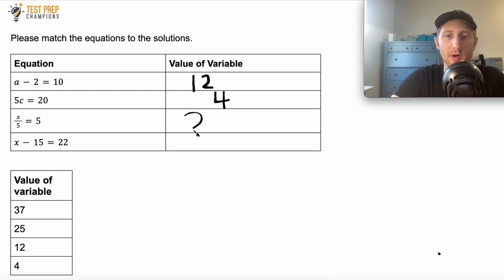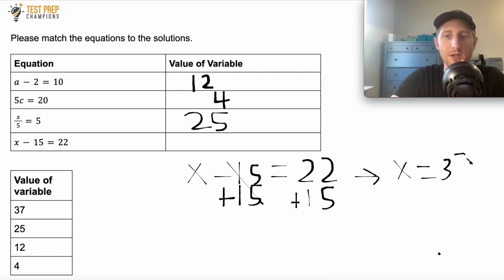So I'm going to put 25 here in the box. So now we have x minus 15 equals 22. And the name of the game here is to get that x by itself. So since it's x minus 15, I want to do the opposite of minus, which is plus. So I add 15 here. And I also have to add 15 to this side. So now let me rewrite this. So 22 plus 15 is 37. So x equals 37. So I'll put 37 in the box here.